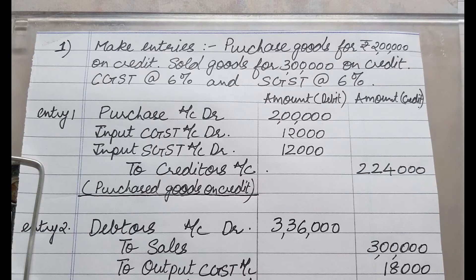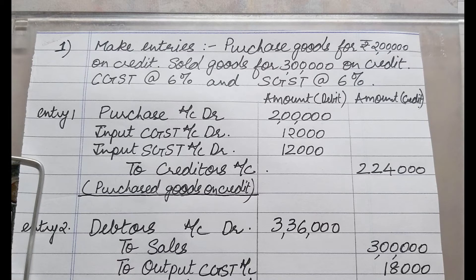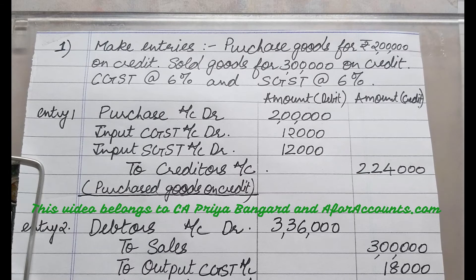Then what entry would you have done if you purchased the goods? The entry would have been: purchase account debit, to creditors. Had it been cash, your entry would have been: purchase account debit, to cash. But now since it is a credit purchase, input CGST and input SGST also have to be debited. Remember that purchase is an expense and input purchase you debit.